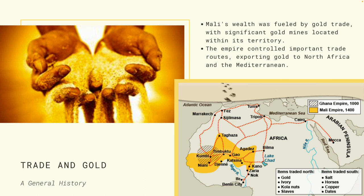Mali's wealth was fueled by gold trade, with significant gold mines located within its territory. The empire acquired gold through trade and sometimes through conquering neighboring regions. It controlled important trade routes, exporting gold to North Africa and the Mediterranean. On the map, the yellow areas represent the Mali Empire and the broken red lines show the trade routes.